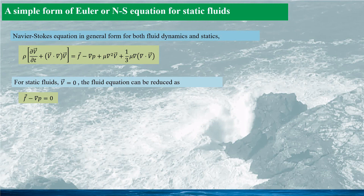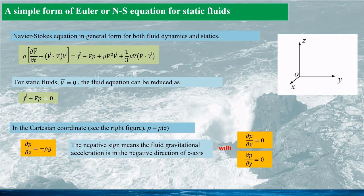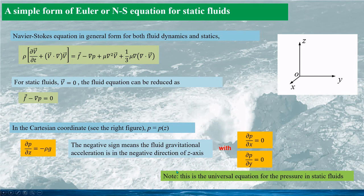In statics, the Navier-Stokes equation can be much simplified since all terms related to velocity will vanish, giving us a simplified equation. This static pressure differentiation equation can be used for all fluids, not necessarily limited to Newtonian fluids. Using Cartesian coordinates as shown in the plot, the equation simplifies further. The negative sign means gravitational acceleration is in the opposite direction of z, and pressure is a function of z only, independent of x and y.